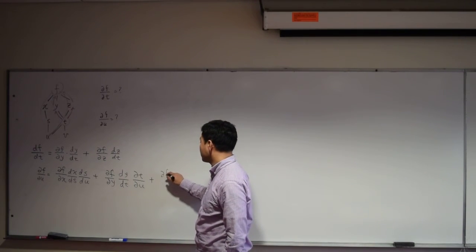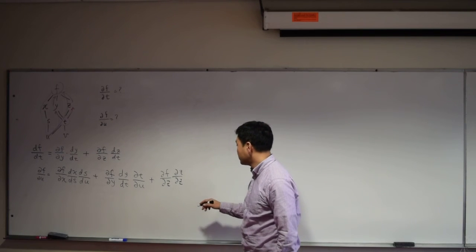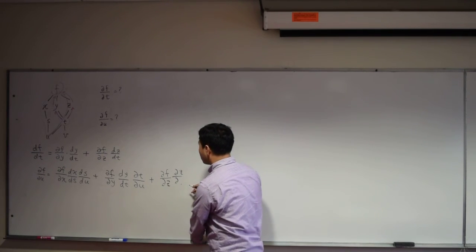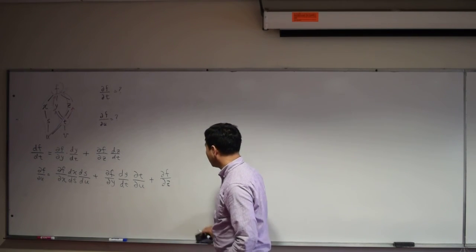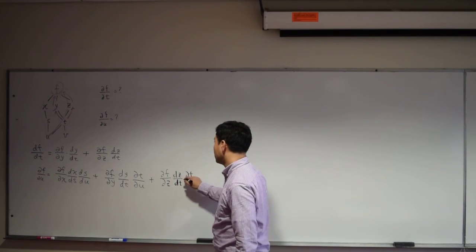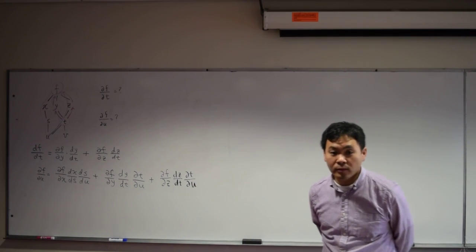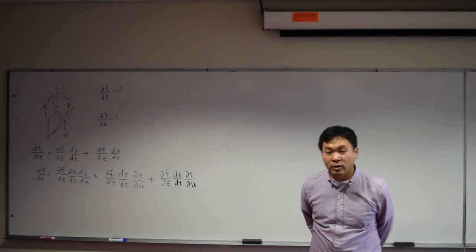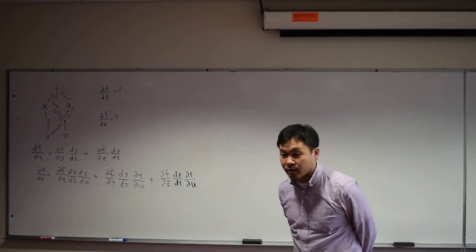And the other path is from u going to f going through z. That's all the possible paths from u to f, and therefore when you add all of these, you get the value of this whole change.